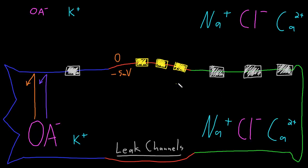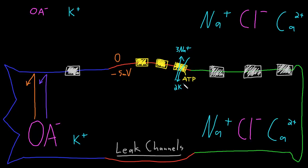For the next imaginary step, let's consider what happens when we add the sodium-potassium pump to the neuron membrane. This is going to be our sodium-potassium pump — an active ion transporter. It will use the energy of one ATP molecule to actively transport three sodium ions outside the neuron in exchange for two potassium ions being transported to the inside of the neuron.